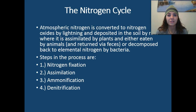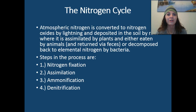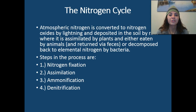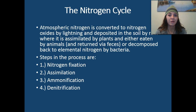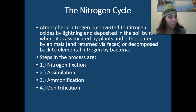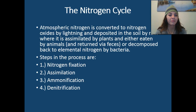Next, we're going to examine the nitrogen cycle — this is one you really need to take notes over, as we're going to go in depth. Atmospheric nitrogen is converted to nitrogen oxides by lightning and deposited into the soil by rain, where it is assimilated by plants and either eaten by animals and returned via feces, or decomposed back into elemental nitrogen by bacteria. There are several steps that occur in this process: nitrogen fixation, assimilation, ammonification, and denitrification.